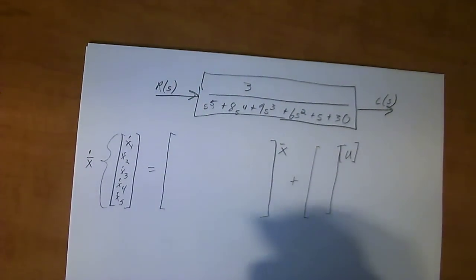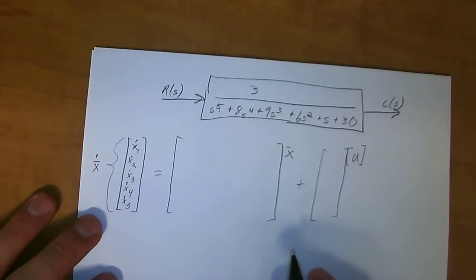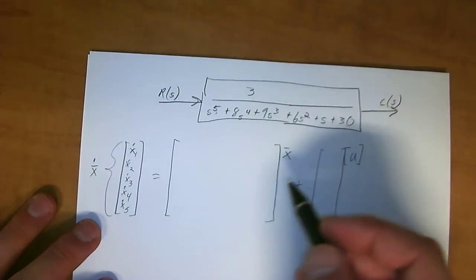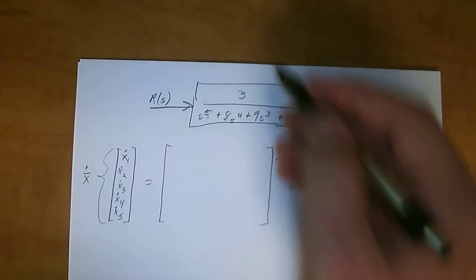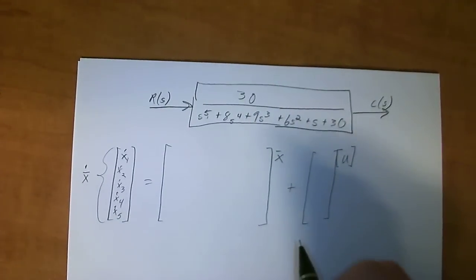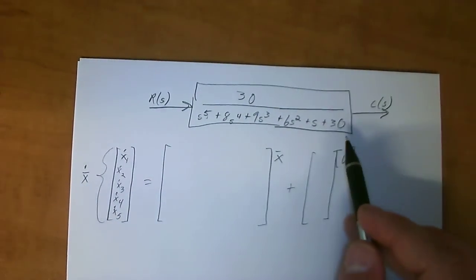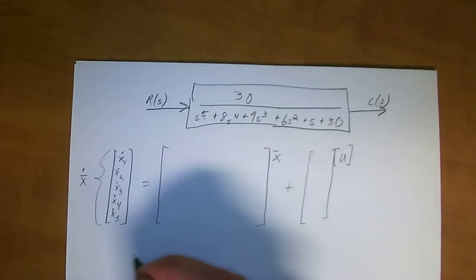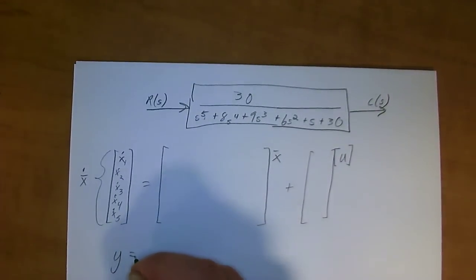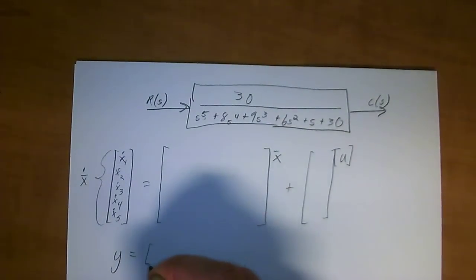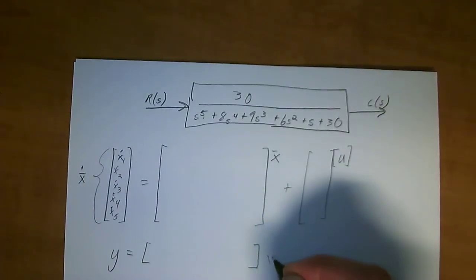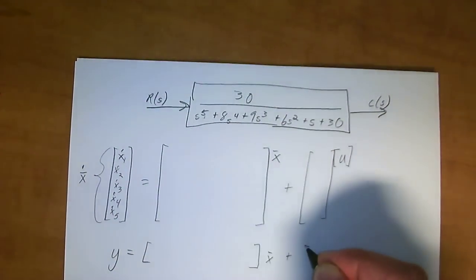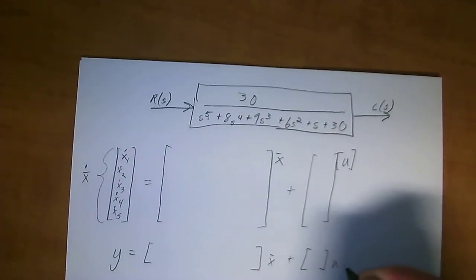In order to put this into a state-variable form, what you got to do is you have to look at the numerator and your denominator. The numerator is 30. You also have down here y is equal to something, a 1 by 5 vector of x bar plus u again.